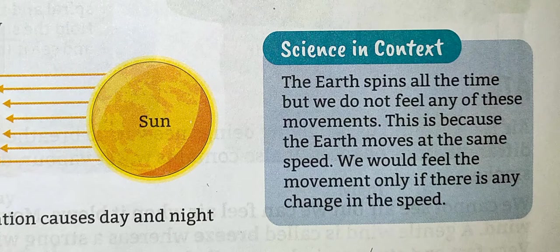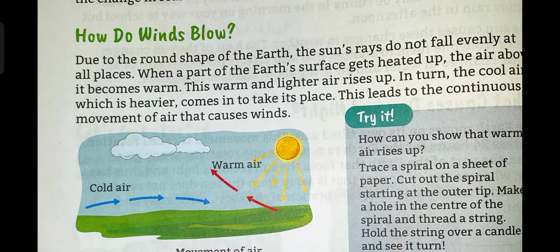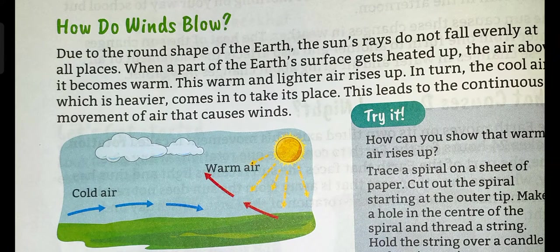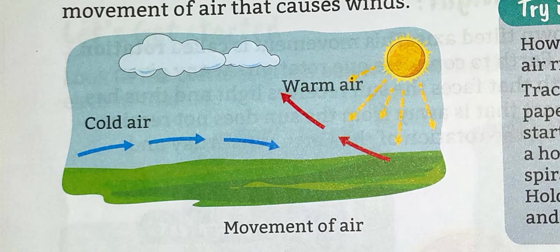Now let's go to the next topic: how do winds blow? The reason behind it is the heat of the sun. The sun heats up the air, and it becomes lighter compared to cold air. So the lighter warm air goes up into the sky, creating a low pressure — a vacant place. To fill that vacant place, cold air from away from the sun rushes in, and that is how the wind blows.